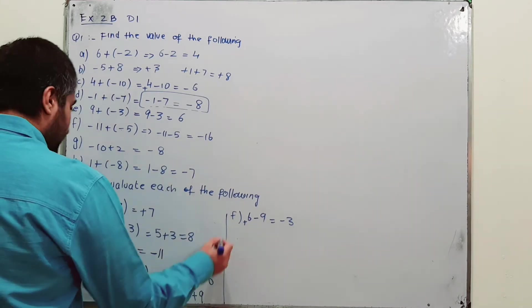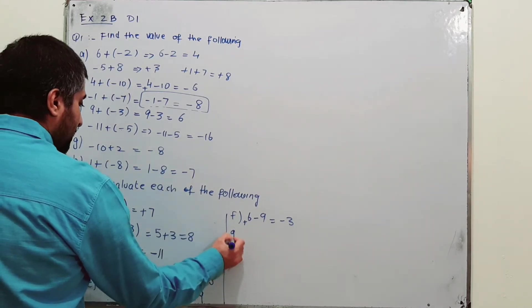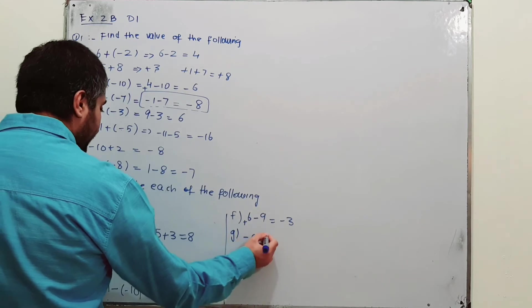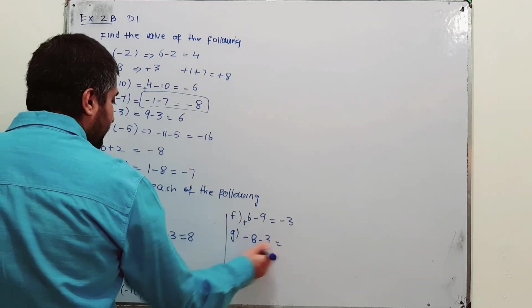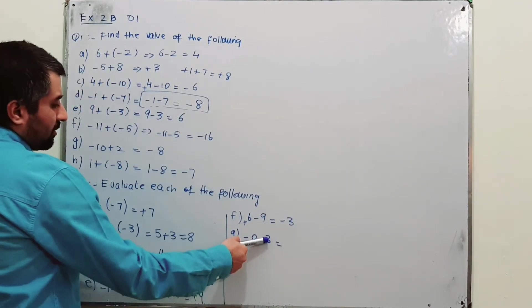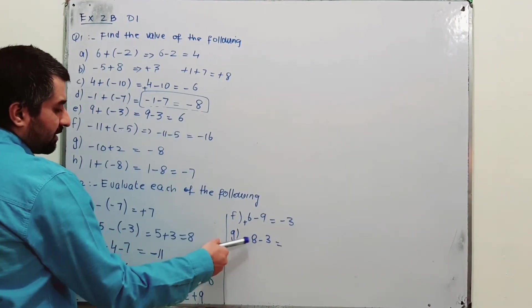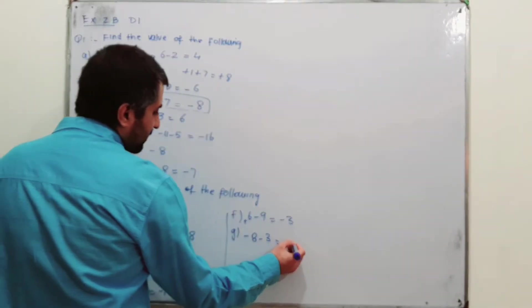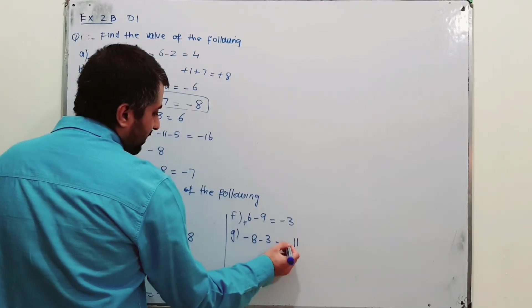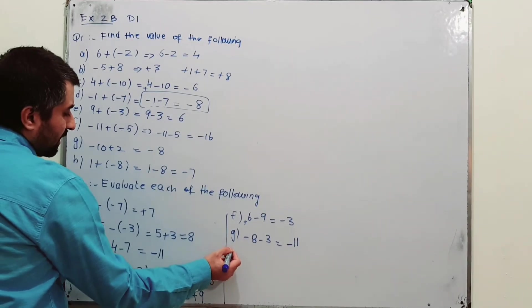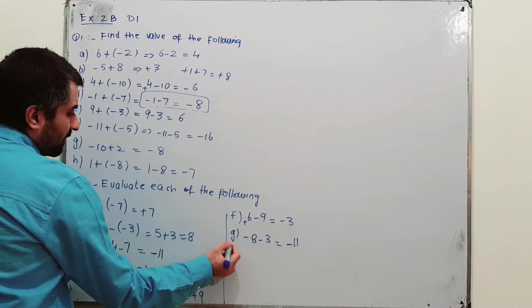Part G: minus 8 minus 3. Both numbers have a negative sign, so you add them: 8 plus 3 is 11. However, the sign will be negative because both numbers are negative.